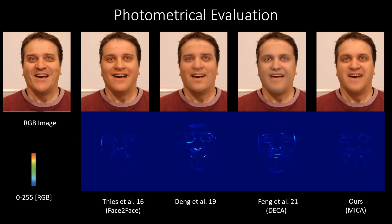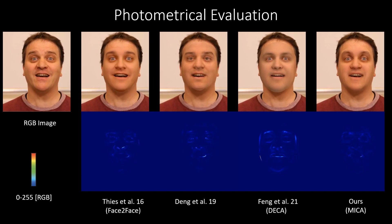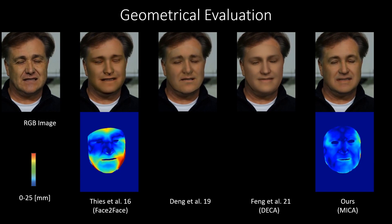We show a photometric reconstruction evaluation where our method achieves the lowest errors. To evaluate the metrical tracking, we use a sequence where we have a reference depth reconstructed in a calibrated stereo system. As can be seen, our method achieves significantly better depth alignment in comparison to the method of Tees et al. Note that the methods of Fong et al. and Deng et al. are not predicting a 3D spatial alignment of the face, thus a depth evaluation is not possible.